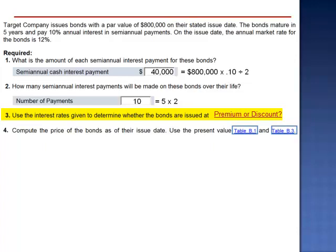Requirement 3 asks us to use the interest rates given to determine whether the bonds are issued at a premium or a discount. Well, we already answered that question. There's an inverse relationship between the market rate and the selling price. Since the market rate is higher, the selling price will be lower. These bonds will sell at a discount.